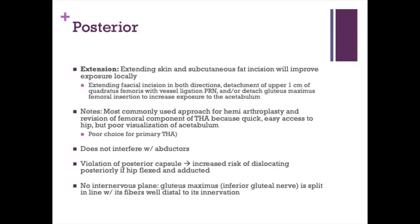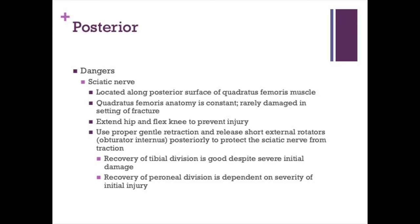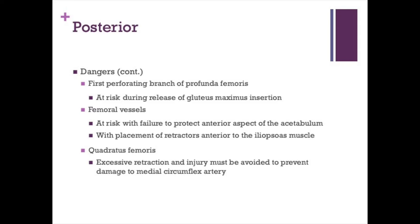Dangers include the sciatic nerve — leave the quadratus femoris intact. Dislocating can cause a spiral oblique femoral fracture, so use proper gentle retraction and release the short external rotators posteriorly to protect the sciatic nerve. The first perforating branch of the profunda femoris artery is at risk, though not a major concern in total hip replacement. Femoral vessels are at risk only with overzealous anterior retractor plunging. Excessive retraction in the quadratus femoris can damage the sciatic nerve, and the medial femoral circumflex artery comes around the backside of the femur right above the quadratus.